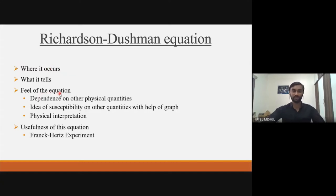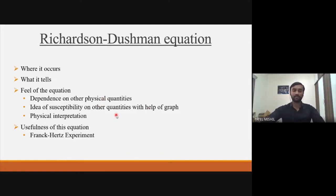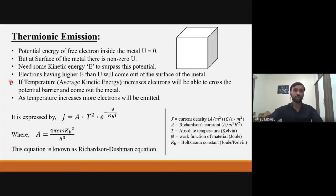We will try to fill this equation — what I mean by 'fill this equation' is we will see how many physical quantities this equation depends on, which those quantities are, and how susceptible it is to them. We will use graphs to determine the value of current density j, then physically interpret it, and finally see the usefulness of this equation.